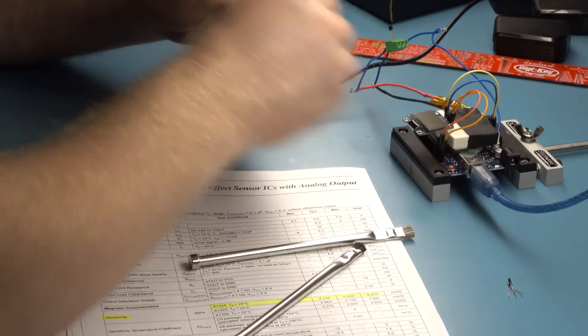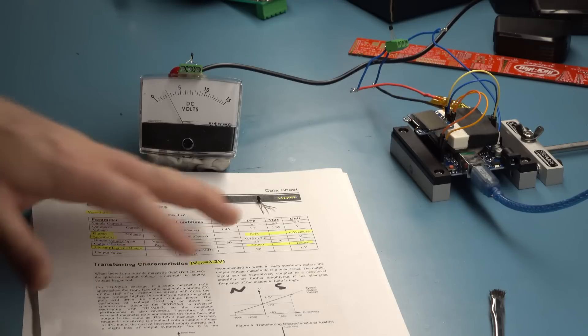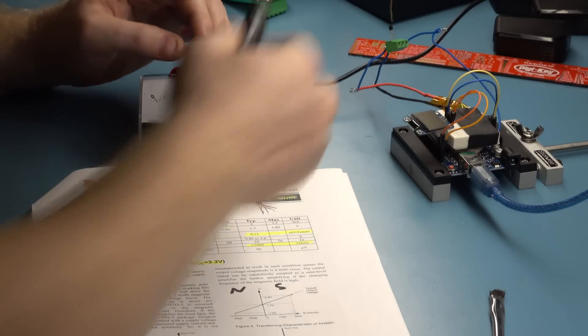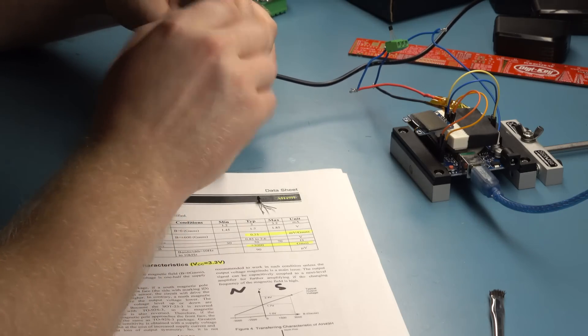So it does have its place, but not for a Gauss meter. So what I have here is a much better Hall effect sensor. So I'm going to go ahead and cut the power and swap this out.